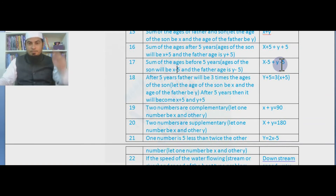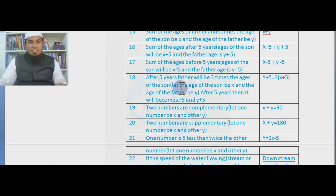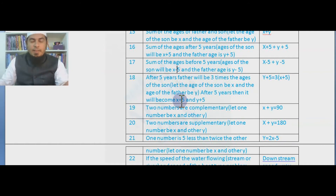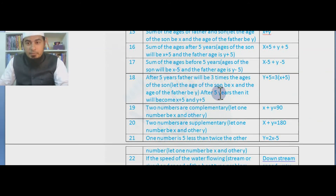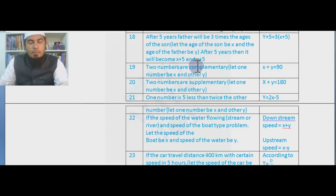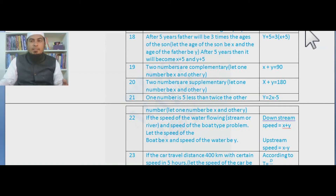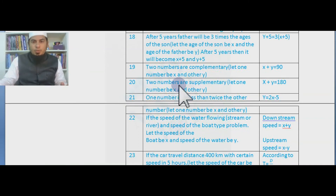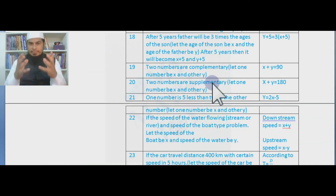After five years the father will be three times the age of the son. After five years: son's age = x + 5, father's age = y + 5. According to the statement, y + 5 = 3(x + 5). Now, if two numbers are complementary, the word 'complementary' tells us that x + y = 90.